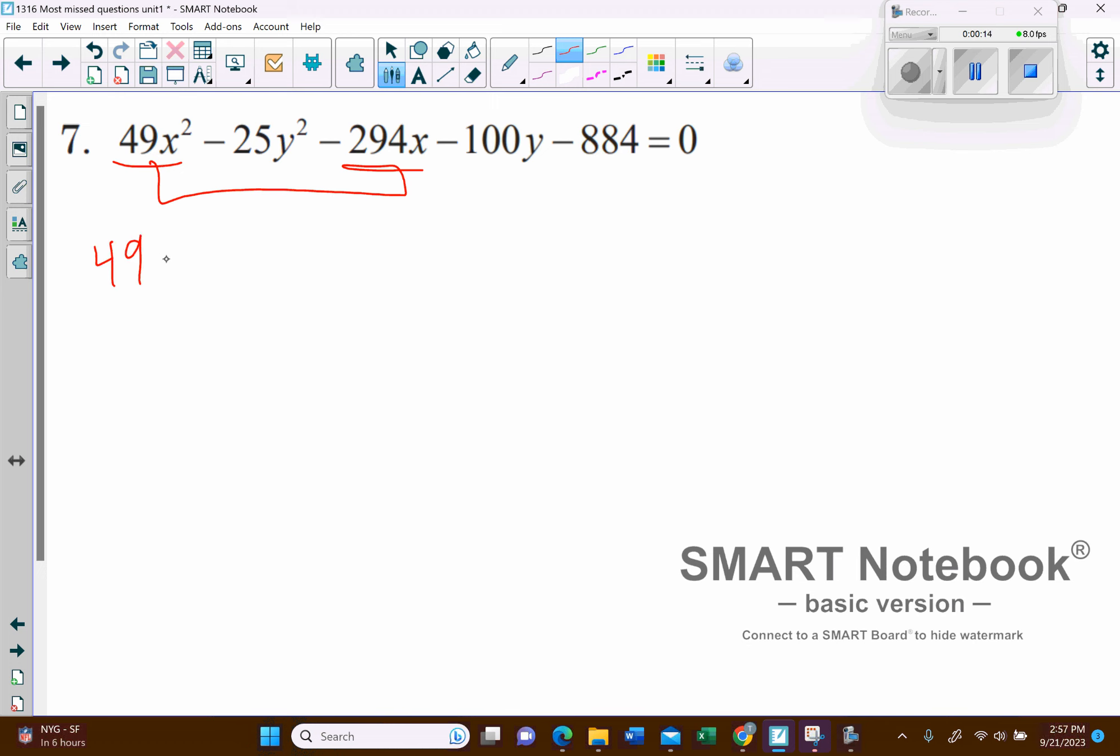I'm going to start by factoring out the 49, and that will leave us with x squared plus, let's see, what is that, 6, or no, it will be minus 6x. And then we'll put our plus blank.